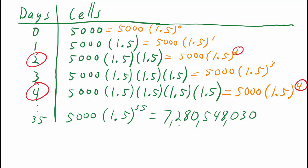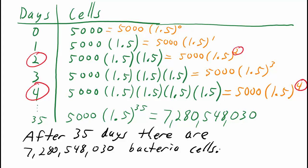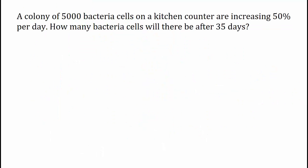So after 35 days, there are 7,280,548,030 bacteria cells. Let's take a closer look at that equation.